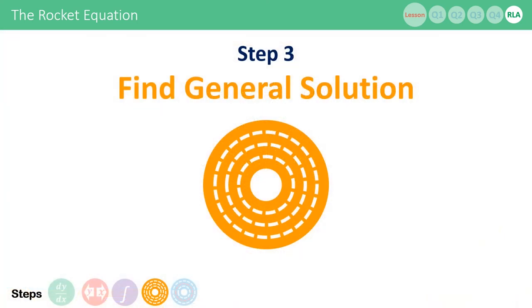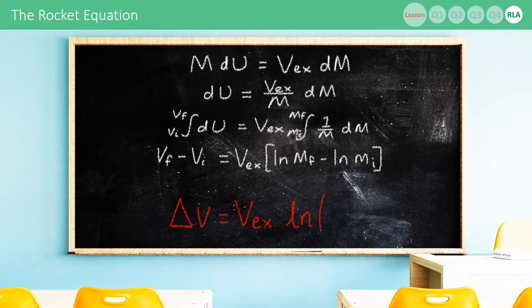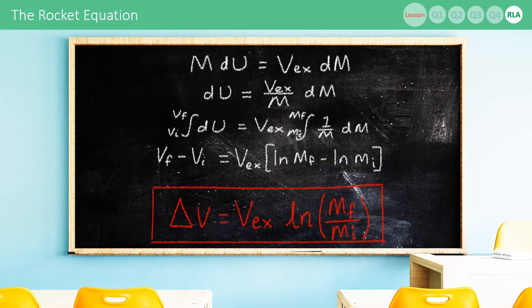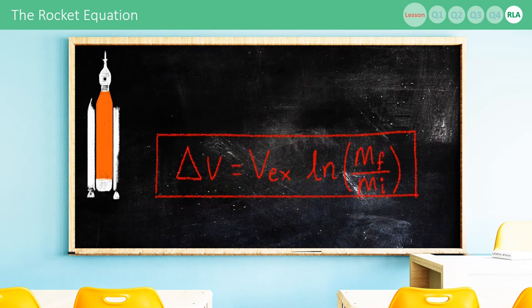We then find our general solution. Our final velocity minus our initial velocity is simply our delta v, and we can also tidy up the right hand side. And there we have the rocket's equation in its full glory.